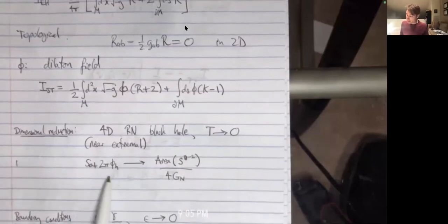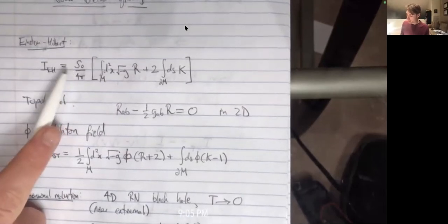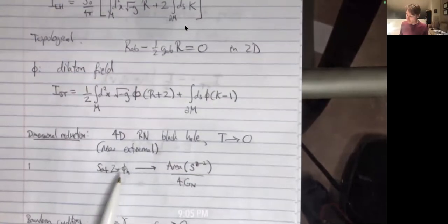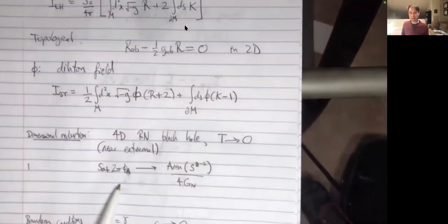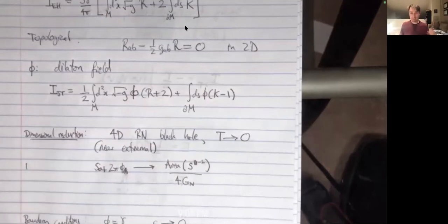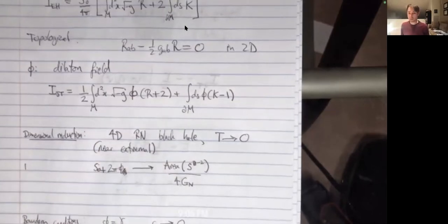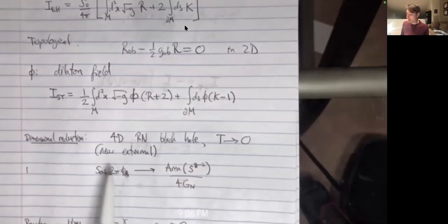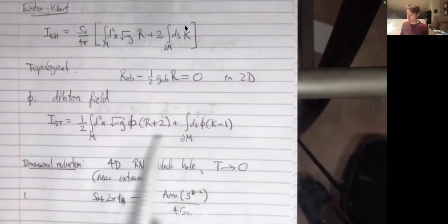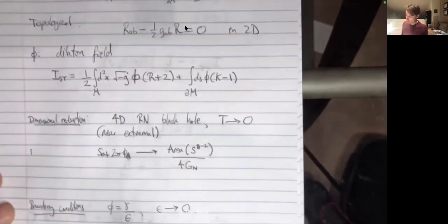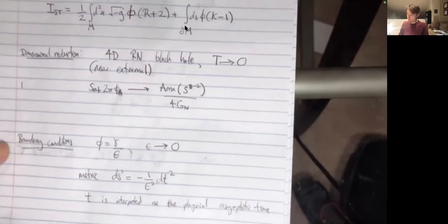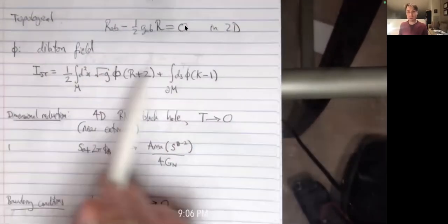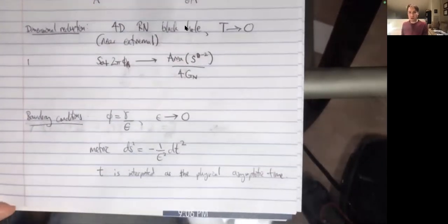The extremal black hole has an area at zero in Planck units, and the dilaton phi tells us about the deviations of that area from extremality — how the size of the sphere is fluctuating over the two-dimensional manifold. You can actually make magnetically charged black holes in the standard model where JT gravity coupled to matter is a very good approximation. We'll also see another reason this occurs due to a particular pattern of symmetry breaking later.